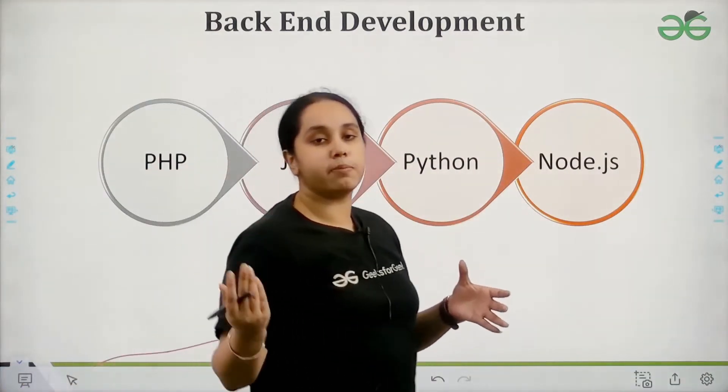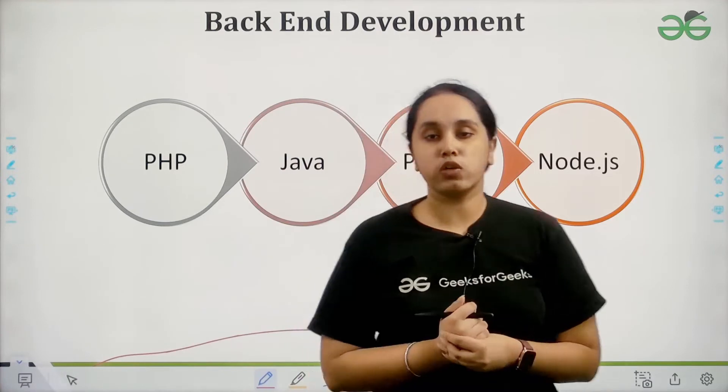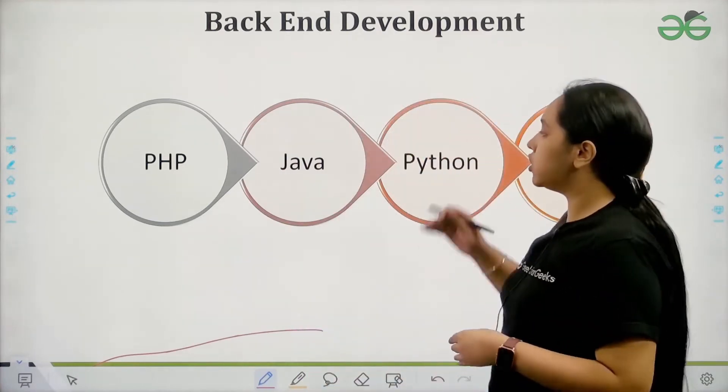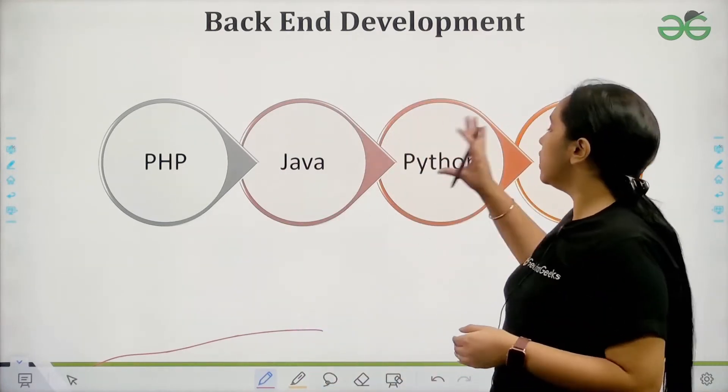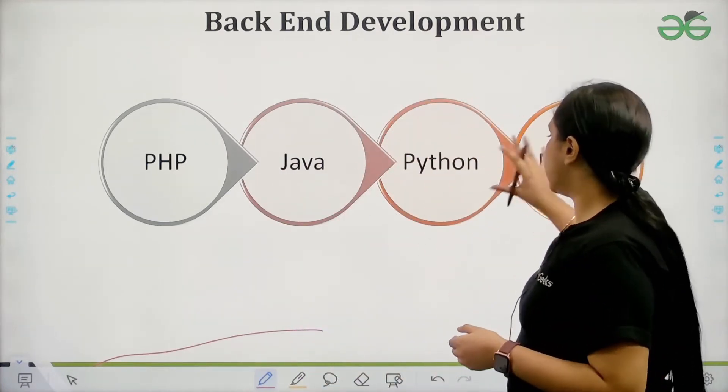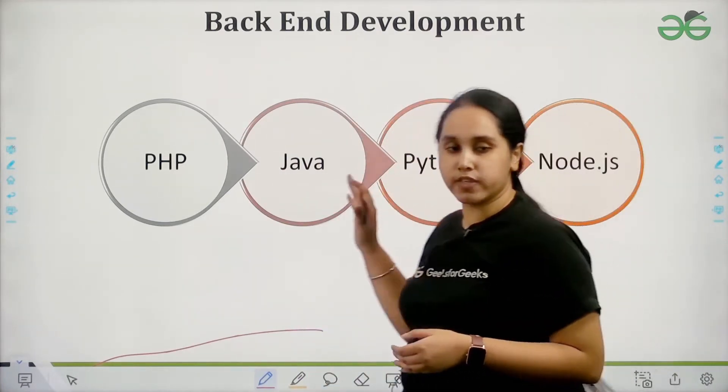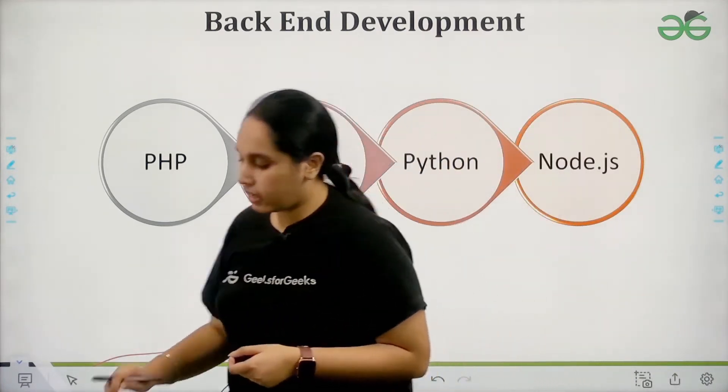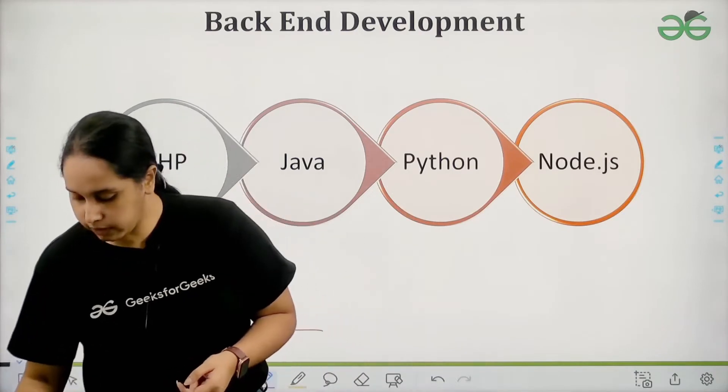These are some of the examples of back end languages: PHP, Java, Python, and Node.js. Now let's move forward.